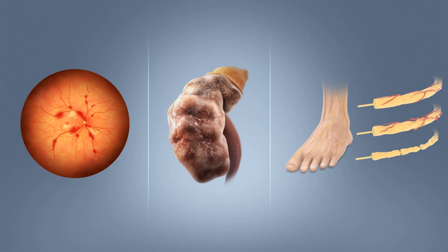Diabetes mellitus is a chronic disease for which there is no known cure except in very specific situations. Management concentrates on keeping blood sugar levels as close to normal without causing low blood sugar. This can usually be accomplished with a healthy diet, exercise, weight loss, and use of appropriate medications — insulin in the case of type 1 diabetes, oral medications as well as possibly insulin in type 2 diabetes. Learning about the disease and actively participating in treatment is important, since complications are far less common and less severe in people who have well-managed blood sugar levels.